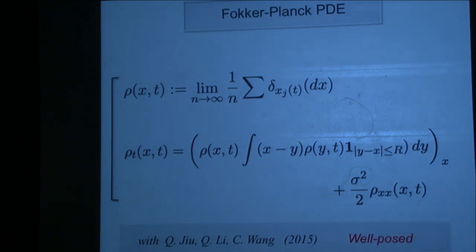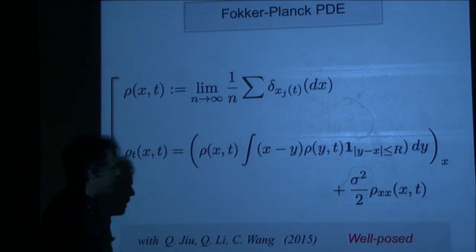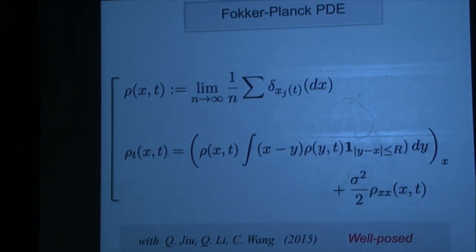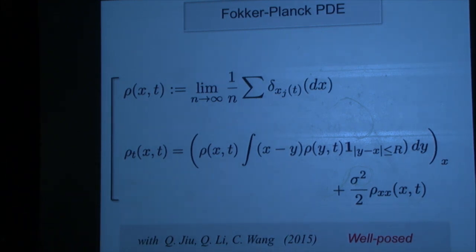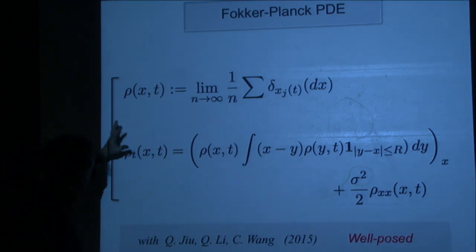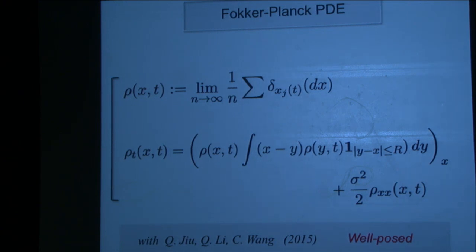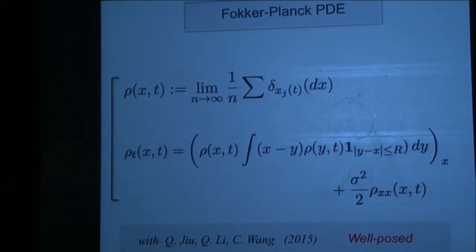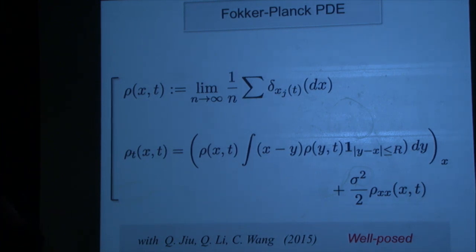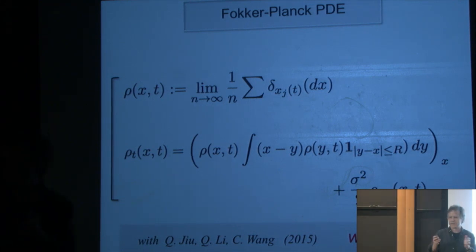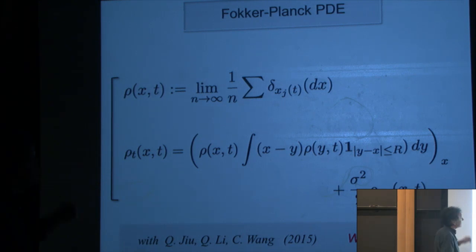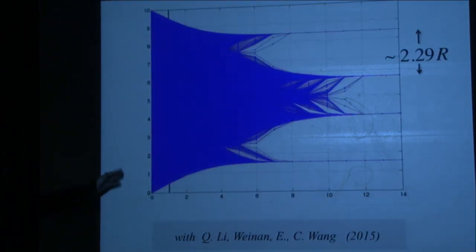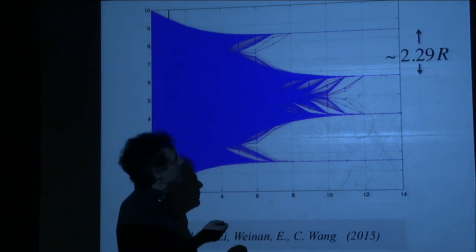We prove two things. First, we show the PDE is well-posed. That's quite a bit of work. Well-posed means the solution exists, it's unique, it's non-negative (it is a probability distribution), and it has certain regularity/smoothness properties. As Hadamard put it, if it's not well-posed, you're barking up the wrong tree — you should only consider PDEs with a unique solution.